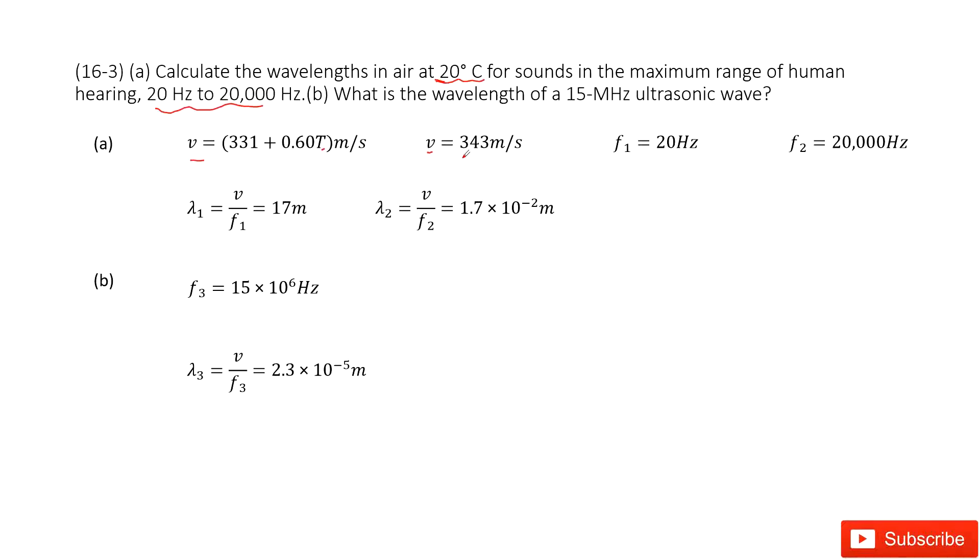And then, so we look at the frequency range. We write it as f1, f2. So in this case, lambda 1 is v over f1, right? Lambda 2 is v over f2.